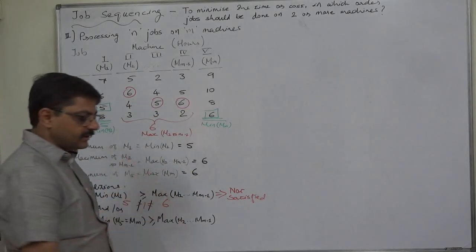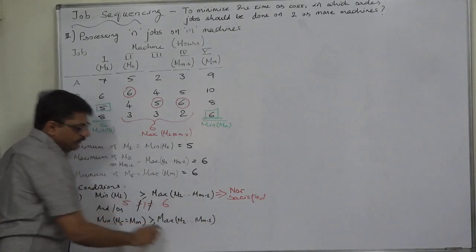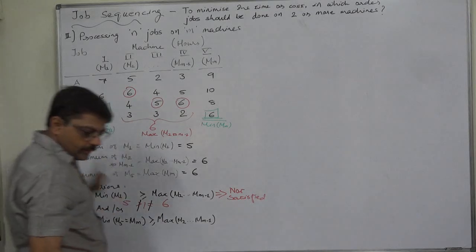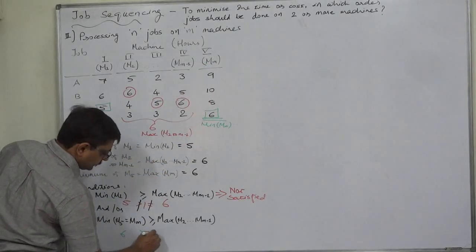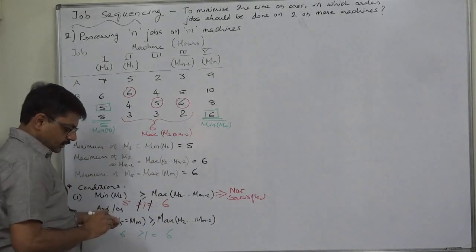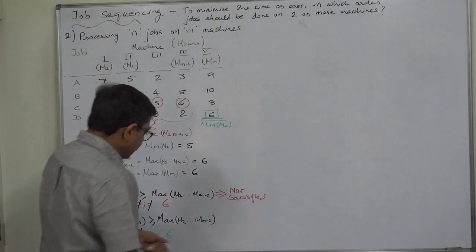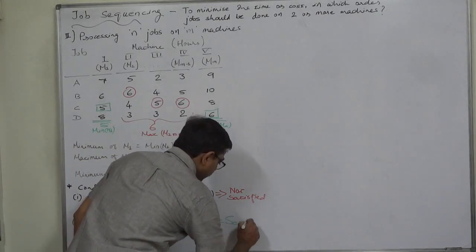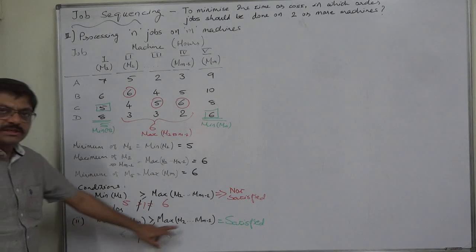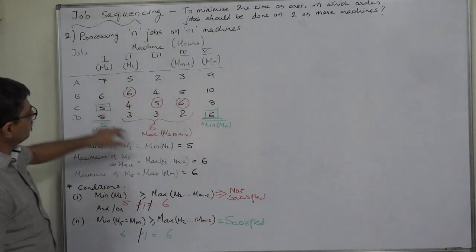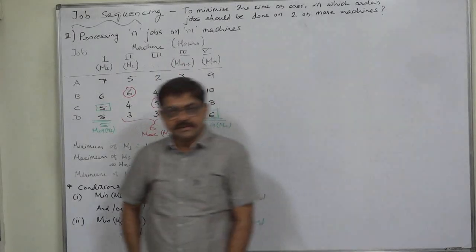So we check condition two: the minimum time on the last machine should be greater than or equal to the maximum time on all other machines except the first. The minimum time on the last machine is six, and the maximum on all those three intermediate machines is also six. Is six greater than six? No — but six is equal to six, so this condition is satisfied. Since the minimum time on the last machine exactly equals the maximum time on the other machines, we can now convert the data into a two-machine format.